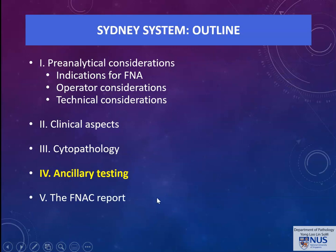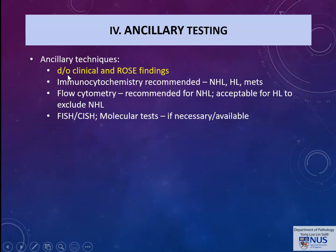Moving on to ancillary testing: it is very important to stress that the ancillary techniques employed differ for every case and depend on the clinical scenario as well as ROSE findings. Immunocytochemistry is recommended if the cytologic picture shows non-Hodgkin or Hodgkin lymphoma or metastases. Flow cytometry is recommended for non-Hodgkin lymphoma and not generally for Hodgkin lymphoma, though acceptable if non-Hodgkin lymphoma needs to be excluded. Other tests such as FISH, SISH, or molecular tests can also be done if necessary or available.